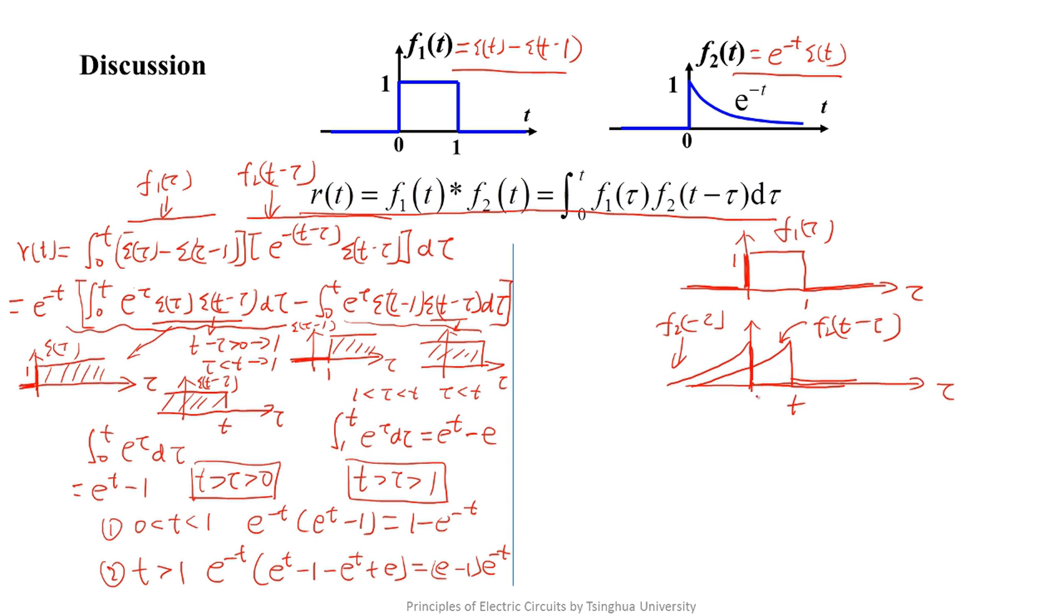We should focus on an important point: whether t is less than 1 or greater than 1. If t is less than 1, then obviously the region that both functions have non-zero values is from 0 to t.